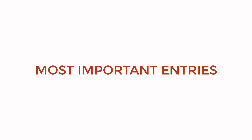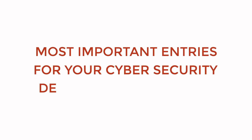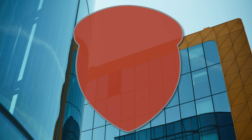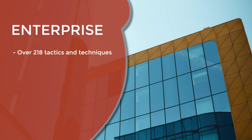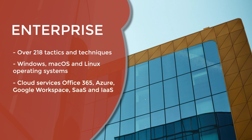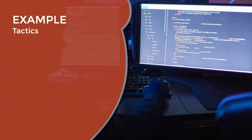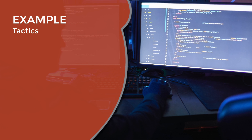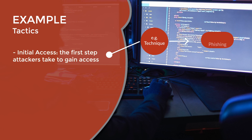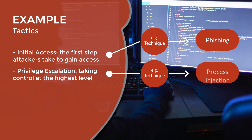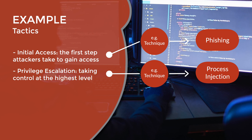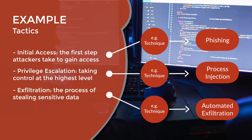MITRE ATT&CK is an exhaustive database of tactics and techniques used by cybercriminals. It is far too extensive to cover in one video, but we can explore the most important entries and what they mean for your cybersecurity, while giving you a deeper understanding of the MITRE ATT&CK framework. Their first and by far largest matrix is for enterprise. This includes ATT&CK tactics and techniques aimed at platforms such as Windows and Mac operating systems, cloud services like Office 365, Azure and Google Workspace, and network infrastructure devices. Must-read tactics for software platforms like Windows and Mac OS, networks and cloud services include initial access — the first step an attacker takes to gain access — privilege escalation and credential access — the steps an attacker takes to control a system at the highest level — and exfiltration, the process ransomware groups use to steal credentials and sensitive data.